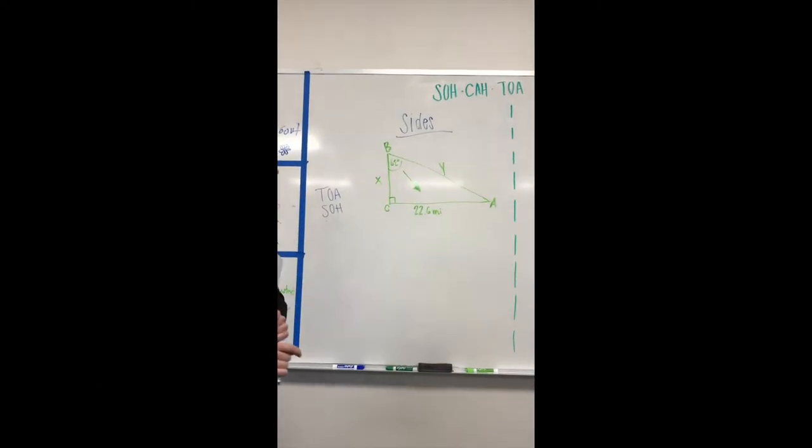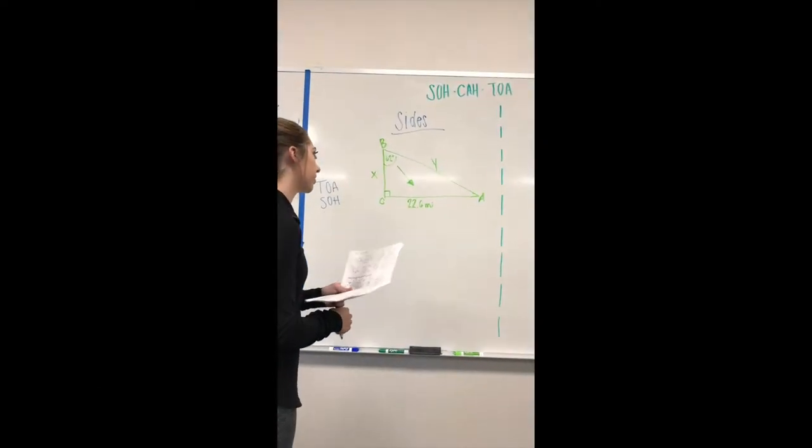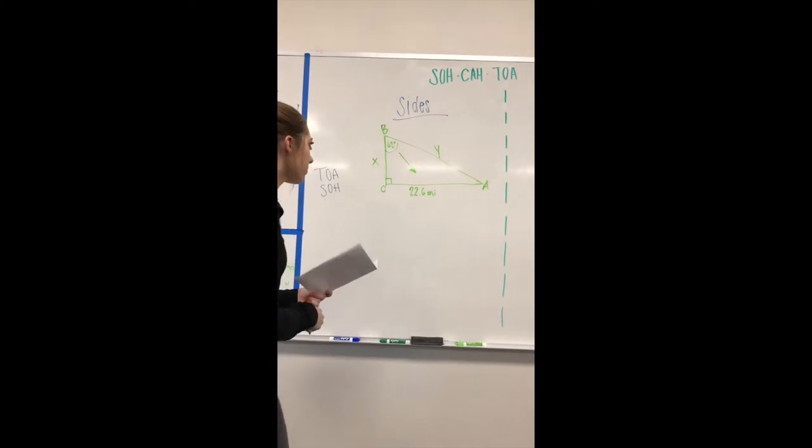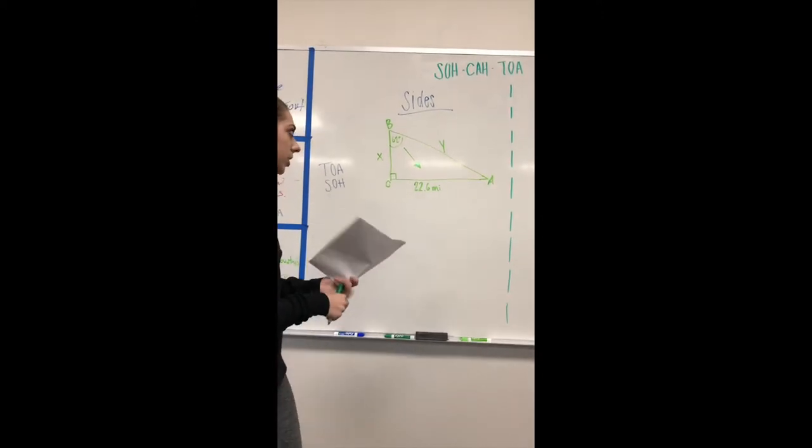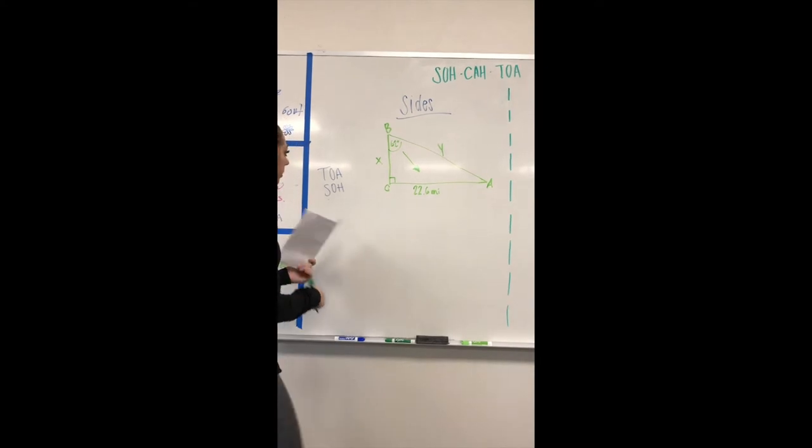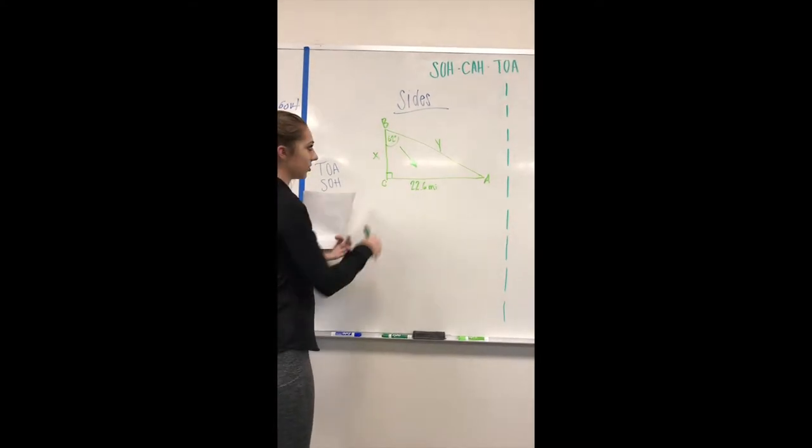Today in class we'll be learning about SOH-CAH-TOA. First we're going to start with the sides and labeling them. As we can see, this is a right triangle so we are going to label it based on the 62 degree angle.